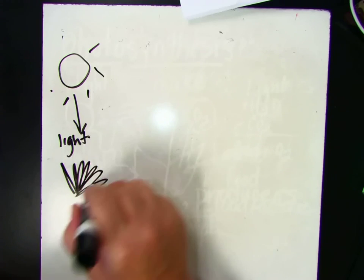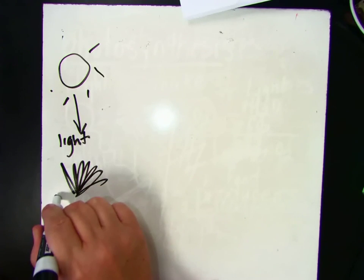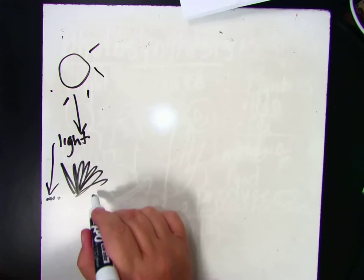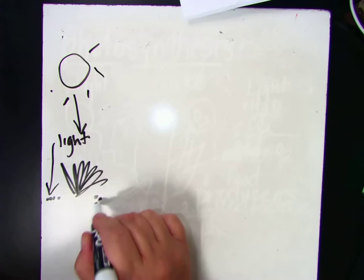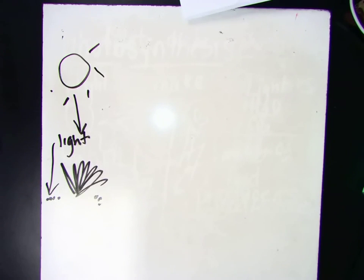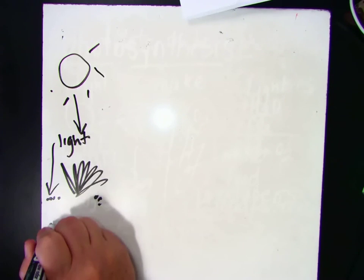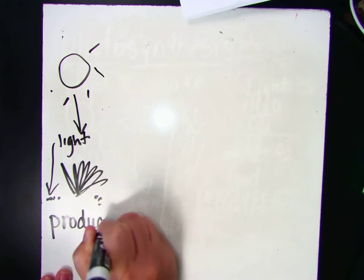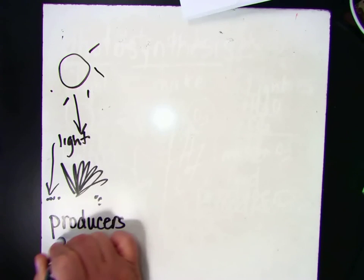I'll just draw some grasses here. You might have some algae that absorbs the light energy, you might have some plankton. Any type of plant will absorb light energy, and what they will do is make food or produce. So they are called producers. Those are plants.